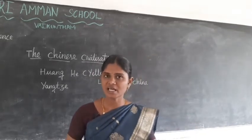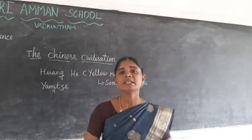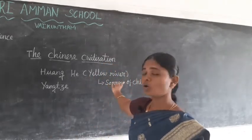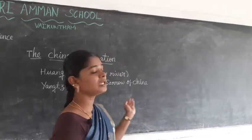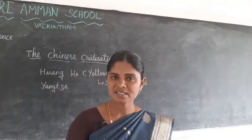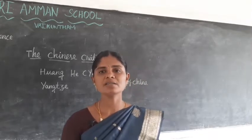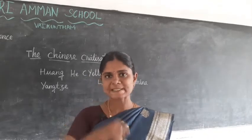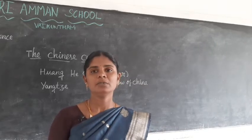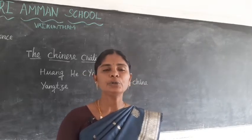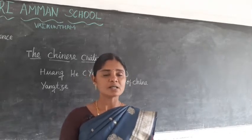China has two major rivers — one is the Huanghe (Hwangi) and another is the Yangtze (Yangtas) river. The river Huanghe is also called the Yellow River. The Yellow River is called the 'Sorrow of China' because of frequent floods. People lost their lives and property due to the frequent floods of this river.